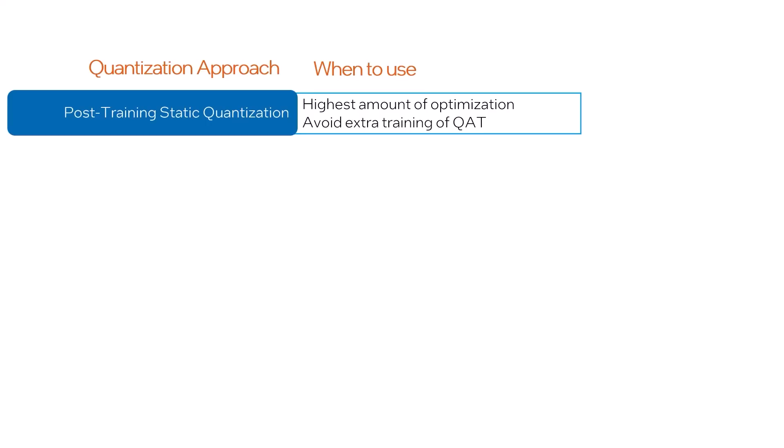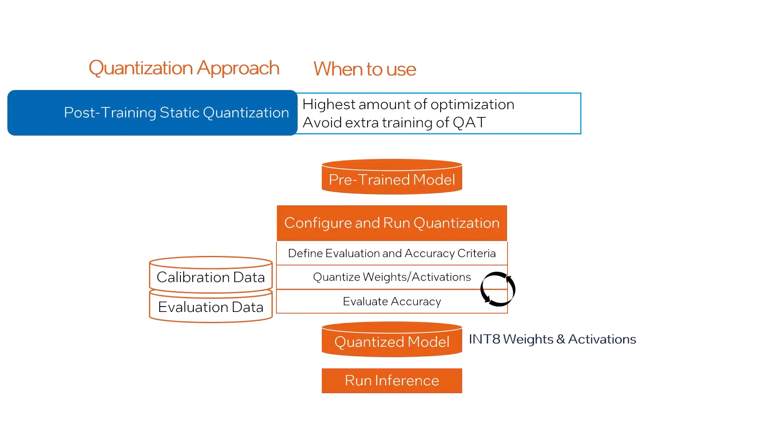Post-training static quantization avoids that training overhead, just adding a calibration step. This runs inference passes on a subset of data, observing what the ranges are for the parameters, so it can map to the integer range as well as possible, then it evaluates the accuracy and possibly iterates until it meets its criteria.